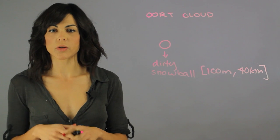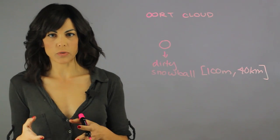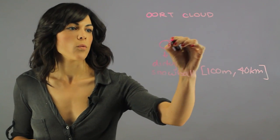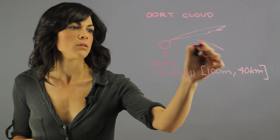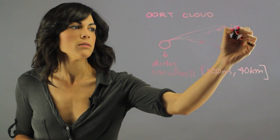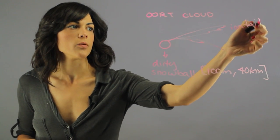It has two tails, but you only see them when the comet is close to the sun. One of the tails is the ion tail, and the other one is the dust tail.